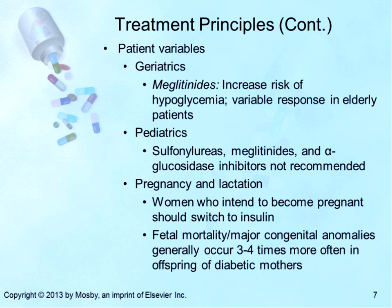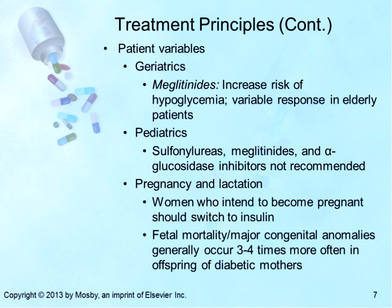For patient variables in geriatric patients, sulfonylurea dosage should be decreased in renal and hepatic impairment to avoid risk of hypoglycemia. The meglitinides increase the risk of hypoglycemia in the elderly and variable responses occur. Metformin should be used with caution because of the risk of accumulation with renal insufficiency and increased risk of metformin-associated lactic acidosis. For pediatric patients, sulfonylureas, meglitinides, and alpha-glucosidase inhibitors are not recommended. Metformin is approved for children ages 10 to 16 at 500 mg BID, regular-release tablets only, with a maximum oral dose of 2,000 mg.